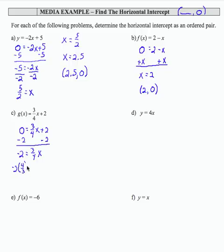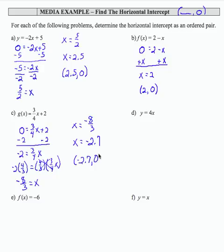So negative 2 times 4 thirds. And I'm going to go ahead and write the 4 thirds times the 3 fourths x on the right. So this product becomes 1. On the left-hand side, I get negative 8 over 3 equals x. So let me rewrite that here. x equals negative 8 over 3. And if I use my calculator and divide negative 8 by 3, I get negative 2.7. That's an approximation to the tenths place. Writing that as an ordered pair, I get negative 2.7 comma 0.